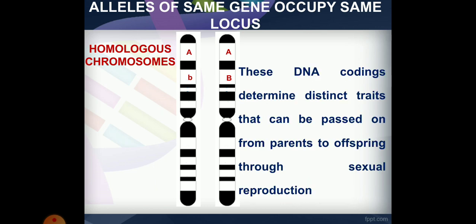DNA codings determine distinct traits that can be passed on from parents to offspring through sexual reproduction.